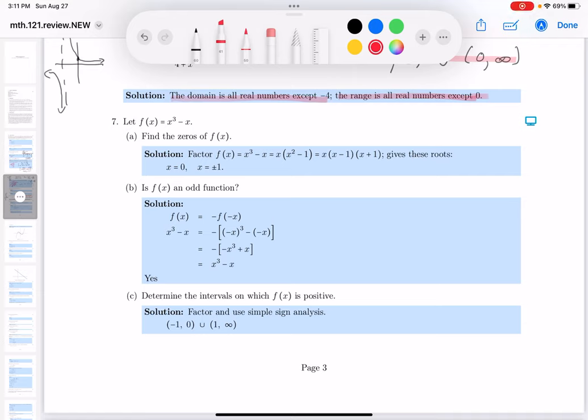For number seven, we're given a polynomial, and we're asked for the zeros. This is a cubic polynomial, so what do I get? The zeros would be when it equals zero, and let me write that down for you. Zero equals x cubed minus x. We typically do this by factoring if we can. So it's going to be x, and then you get x squared minus one.